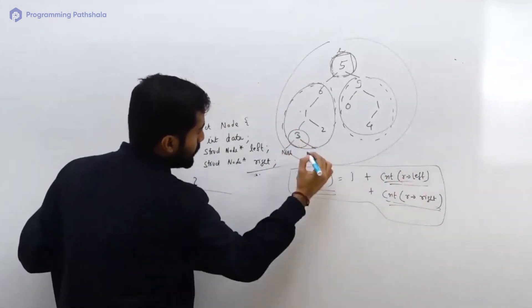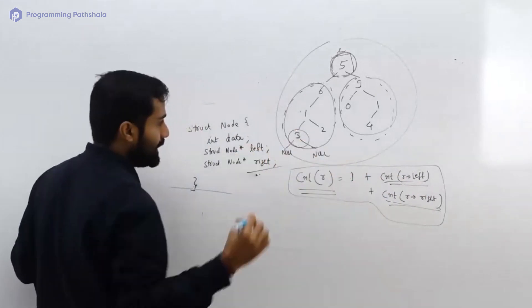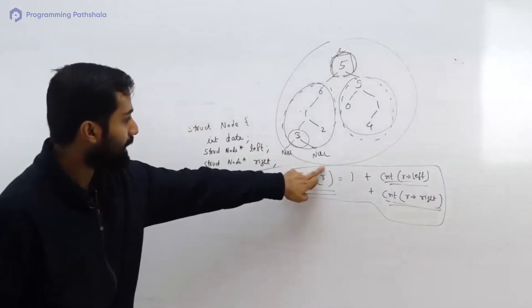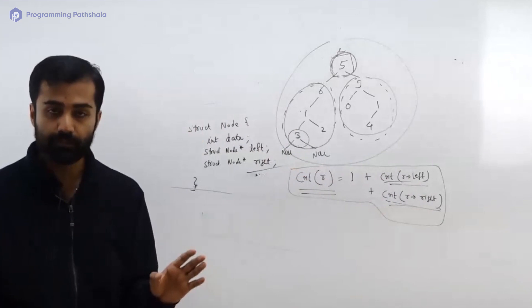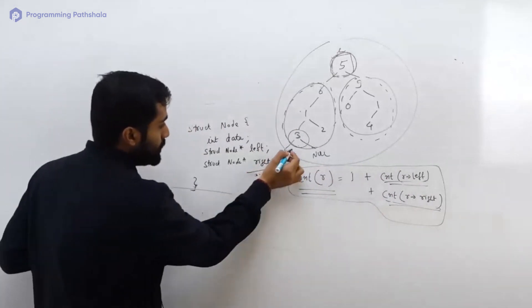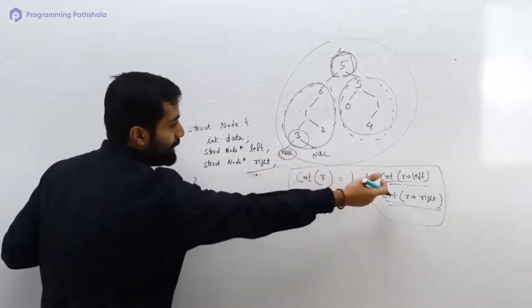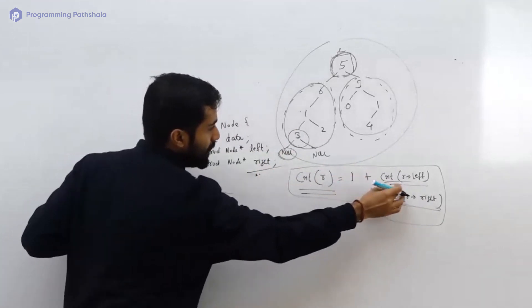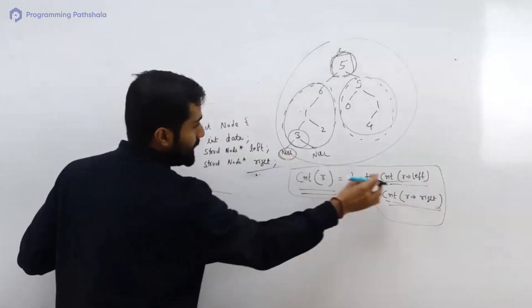Now when you are going to null, null, then there will be some issues. What kind of issues? Let's say you come over here and you again make this call. You do 1 plus count of root.left. Then you will actually do null arrow left.